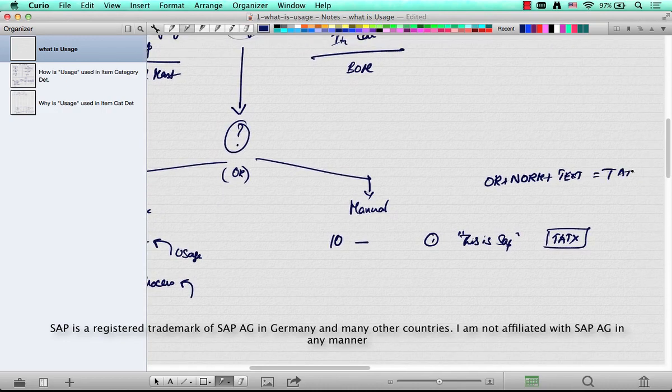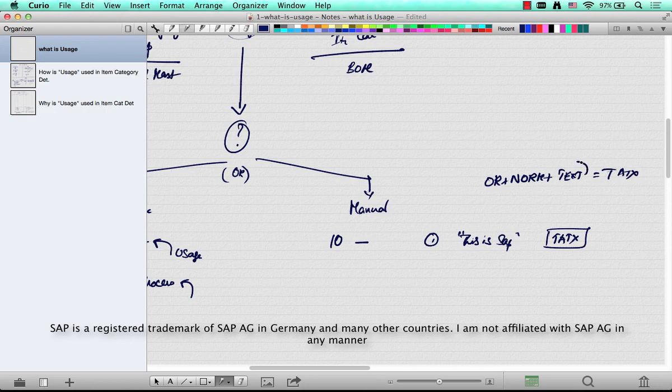Now what determines this usage? When you don't enter the material and enter a description, SAP presumes that it's a text item and then automatically uses a usage of text and then creates an item category that's relevant for text.